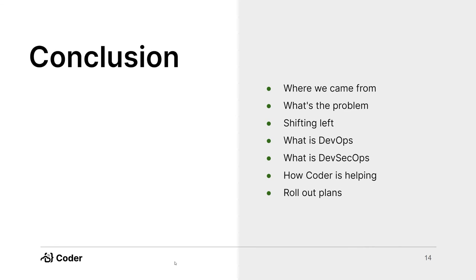Wrapping up: we talked about where we came from — these huge silos with segmented manual processes where teams were passing blame and throwing things over the wall. That problem led to shifting left, which led to DevOps and DevSecOps — basically automating and reducing silos, bringing operations and security teams closer to the developers. Coder is taking this further, saying DevSecOps seems to stop at the CI/CD pipelines — how do we get the developer workspace involved too, to free up developers to do more actual coding and less configuring of their local environment?